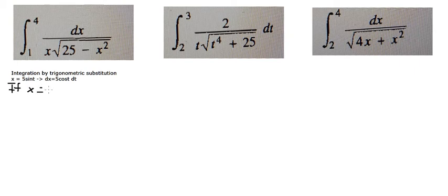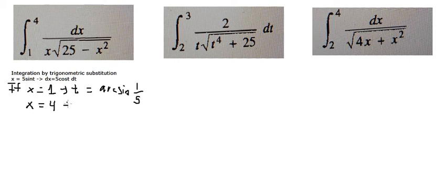If s equals number 1, then t should be about arc-sin of 1 over 5, because we put number 1 in here, we divide both sides by 5, and we can find the value of arc-sin. If s equals number 4, then t should be about arc-sin of 4 over 5.